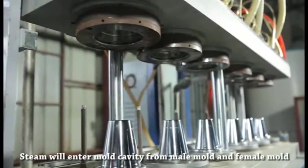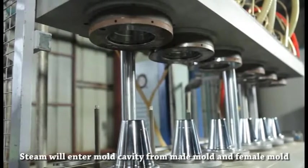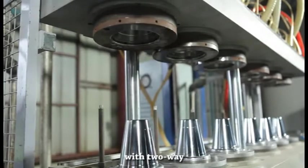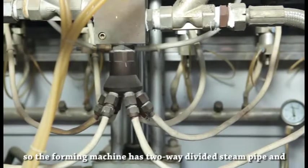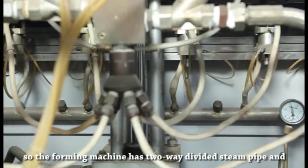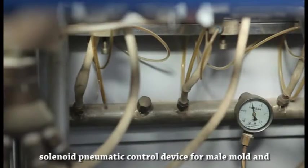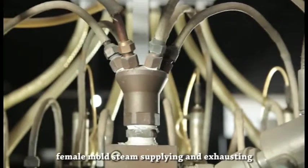Steam enters the mold cavity from male mold and female mold in two ways. The foaming machine has two-way divided steam pipes and solenoid pneumatic control devices for male and female mold steam supplying and exhausting.